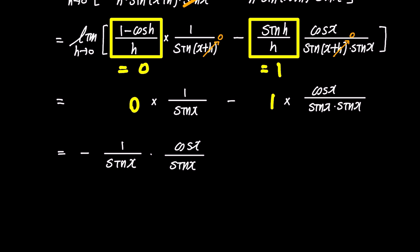So, since 1 over sin x is cosecant x and cos x over sin x is cotangent x, this result ultimately becomes negative cosecant x times cotangent x. Therefore, we have proven that the derivative of cosecant x is negative cosecant x times cotangent x.